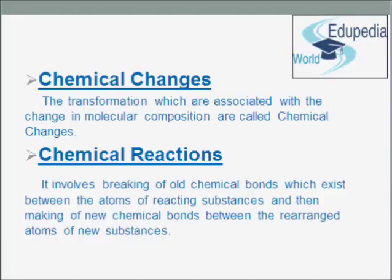Chemical reactions involve breaking of old chemical bonds which exist between the atoms of reacting substances, and then making of new chemical bonds between the rearranged atoms of new substances. Only a rearrangement of atoms takes place in a chemical reaction.